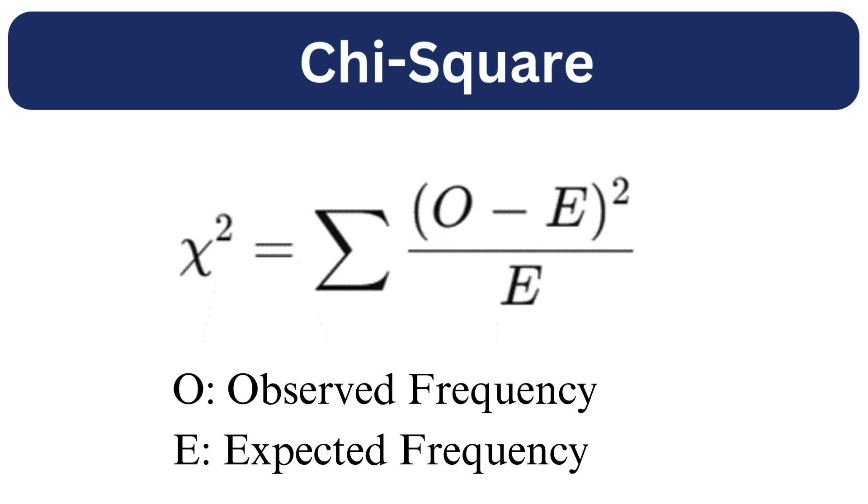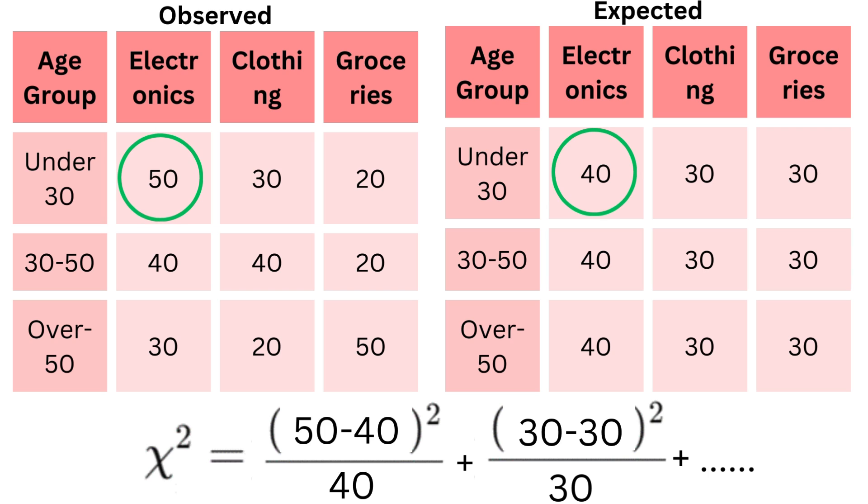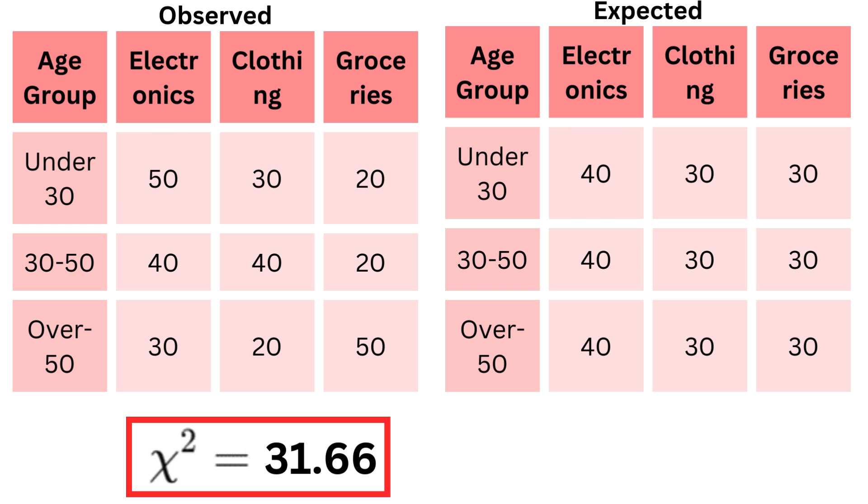To compute chi-square, we take the squared difference of each cell in the observed and expected frequency tables. After dividing by the expected frequency, we sum them all. Now we get a chi-square value.